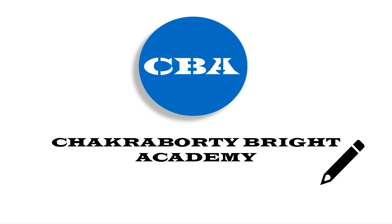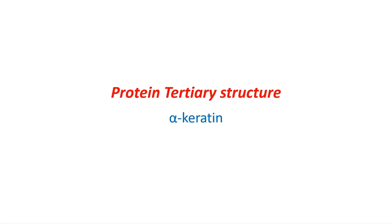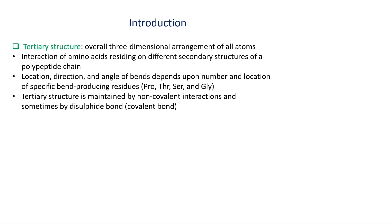Hello friends, today we are going to study about protein tertiary structure, taking the example of alpha keratin. Tertiary structure is the 3D arrangement of all the atoms in the polypeptide, including the backbone and its side chains — how they are arranged, how they interact with each other, their directions, angles — everything comes under the tertiary structure.